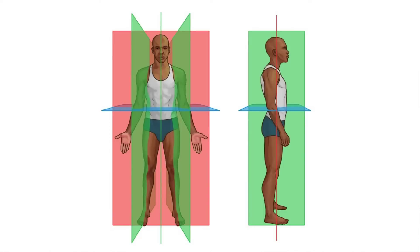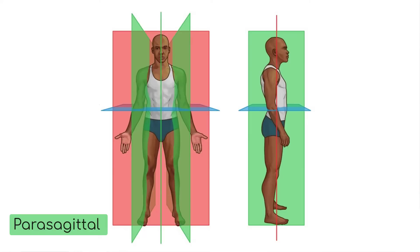The midline is an imaginary line slicing through the middle of the body, and it's one of the planes of the body. The midline is also known as the sagittal plane and splits the body into two roughly equal halves. A slice in the same direction on either side of the midline is called a parasagittal plane. We also have the horizontal plane that divides the body into upper and lower portions, and the coronal plane passing from right to left, dividing the body into front and back.